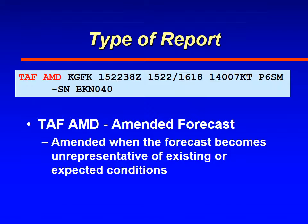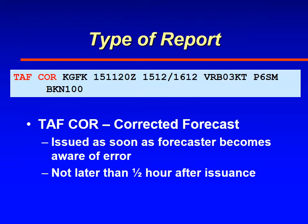You may see AMD at the beginning of the TAF to indicate that it's amended. Once again you don't always see that because it may be deleted from the beginning depending upon the website you use for flight planning. Also you may see COR, which is a corrected forecast. Corrected forecasts can only be made in the first half hour after issuance — that's when the meteorologist realized something is wrong with the forecast. It does not mean that the weather conditions aren't representative; it may be just a typo or something like that.